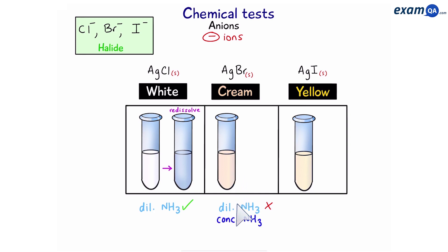However if we add concentrate ammonia then it will dissolve. And finally with silver iodide dilute ammonia has no effect and neither does concentrate ammonia. So it will stay yellow. And that's how we can distinguish between the three different halide precipitates.